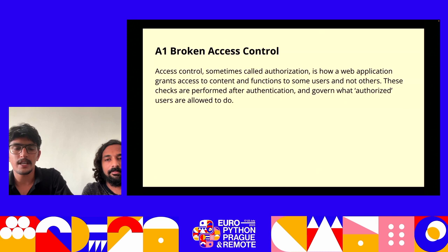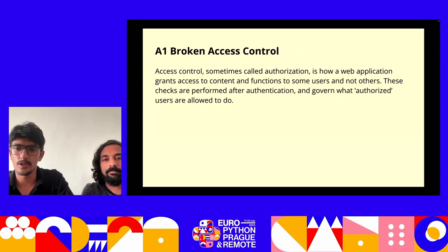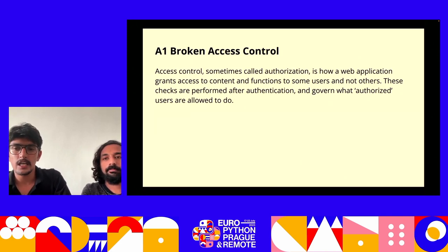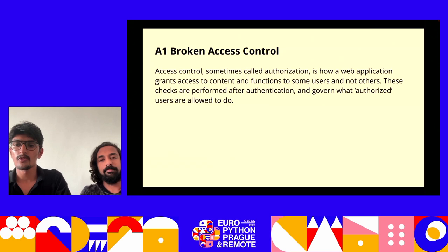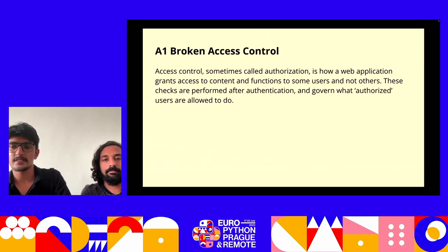The first vulnerability is broken access control. Access control enforces policy such that users cannot act outside their intended permissions. Failures typically lead to unauthorized information disclosure, modification, or destruction of data. Common access control vulnerabilities include bypassing access control checks by modifying the URL, permitting viewing or editing someone else's account by providing a unique identifier, and accessing APIs with missing access controls.